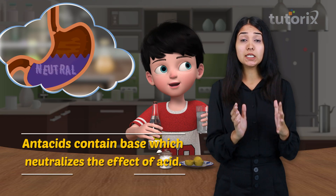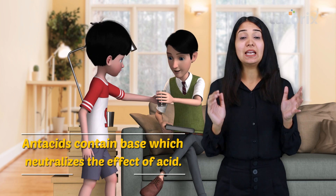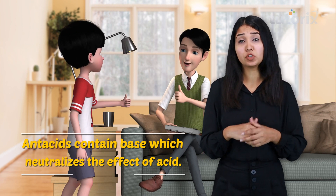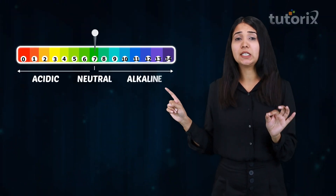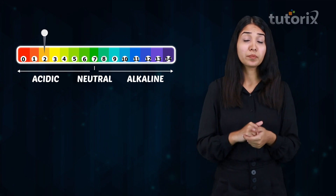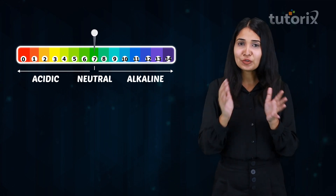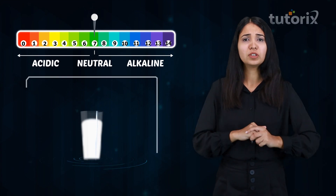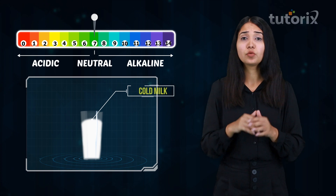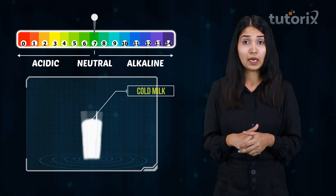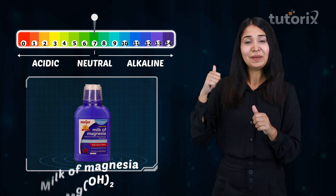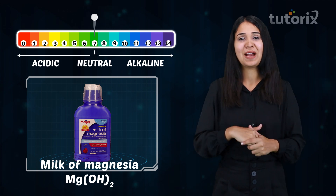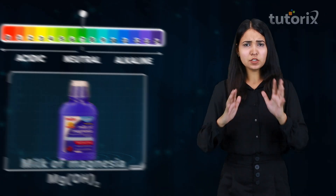Antacids contain bases, and these bases help neutralize the excess acid generated in the stomach. Whenever someone suffers from acidity, the pH goes very low toward the acidic range, and we need a base to bring it back to the neutral range. We can also use cold milk or milk of magnesia — magnesium hydroxide — as treatment.